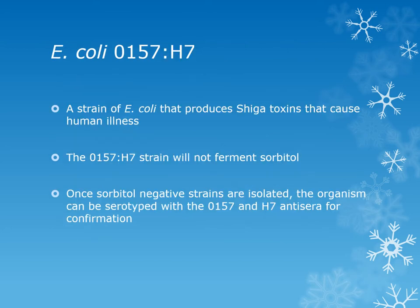The most clinically significant E. coli strain is O157:H7. This is an enterohemorrhagic strain that produces Shiga toxins causing human illness. The O157:H7 strain will not ferment sorbitol, so it is colorless on MAC with sorbitol. Once we isolate a sorbitol-negative E. coli, we have to serotype it with O157 and H7 anti-sera to confirm. This is an agglutination test with specific anti-sera for this strain of E. coli.